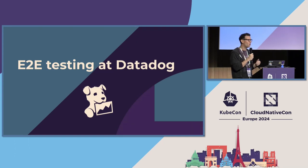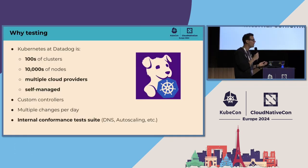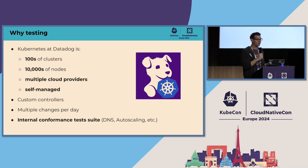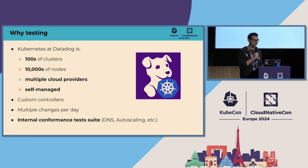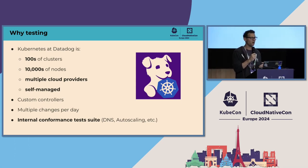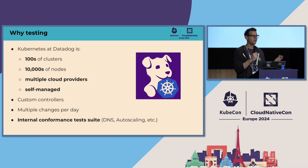Now that you have your 101 on the end-to-end framework, let's discuss how we are using it at Datadog. Why do we even bother with end-to-end tests? At Datadog, we have a Kubernetes setup with hundreds of clusters, thousands of nodes, running across multiple cloud providers. To have the same layer of abstraction and consistency, we run our own Kubernetes software. On top of Kubernetes we install all our internal controllers. There are multiple teams managing all those clusters, making multiple changes per day. How do you make sure that everything is working as expected?